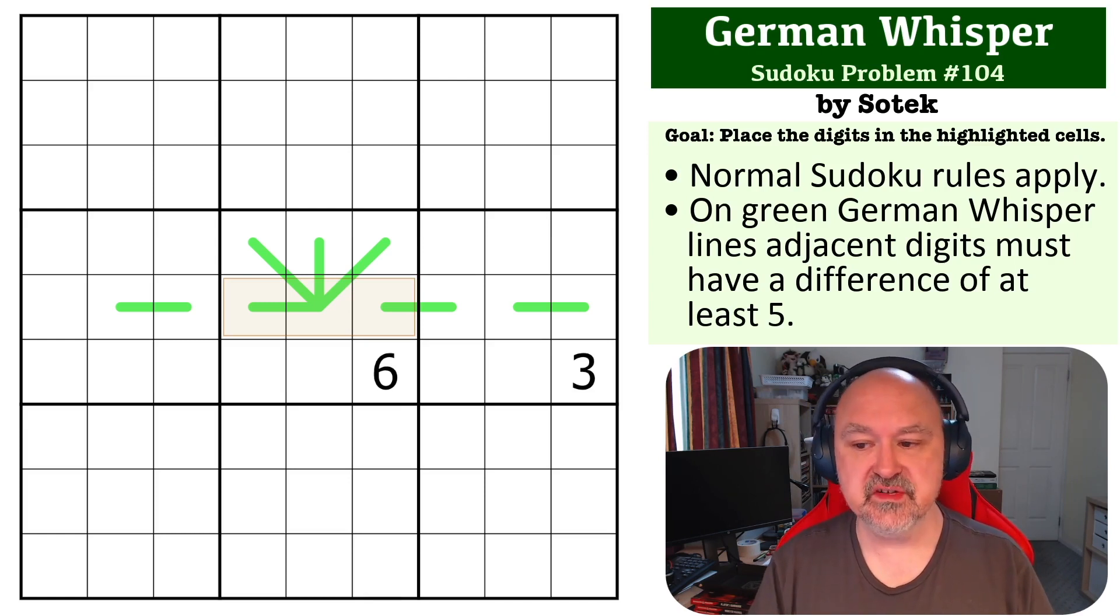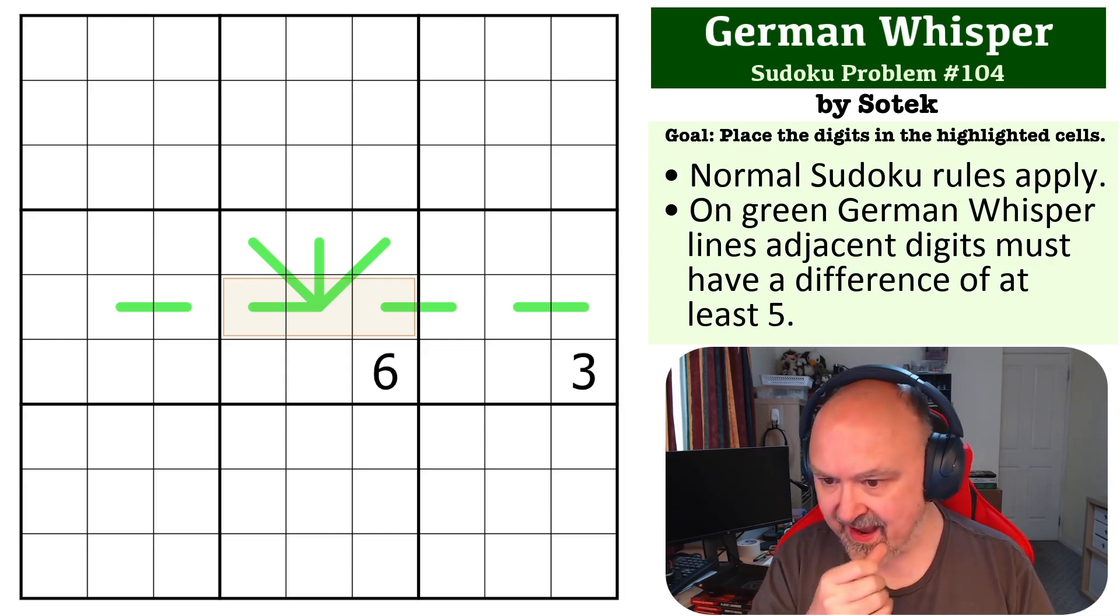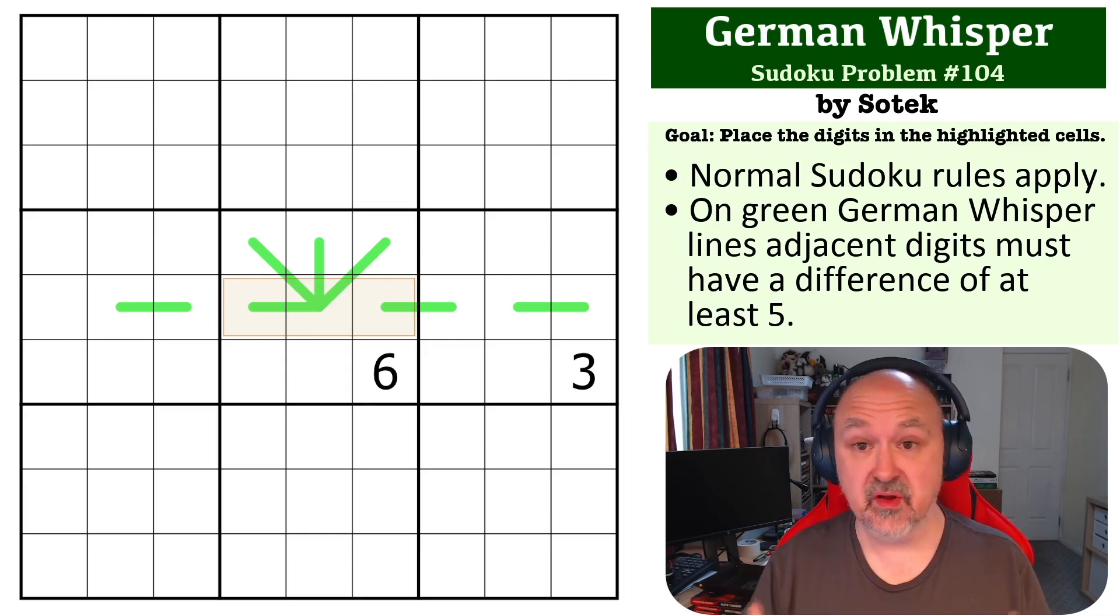The goal is to fully resolve the digits in the highlighted cells. There is a link below to where you can get a copy of this for yourself, and the trick with this is German whisper lines.